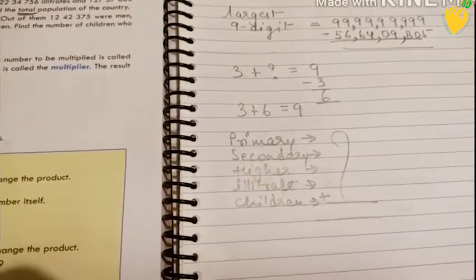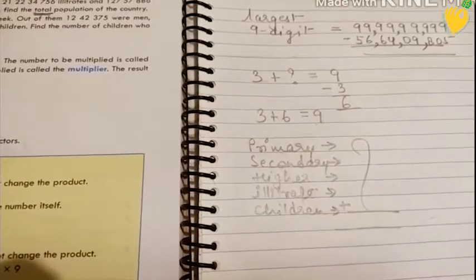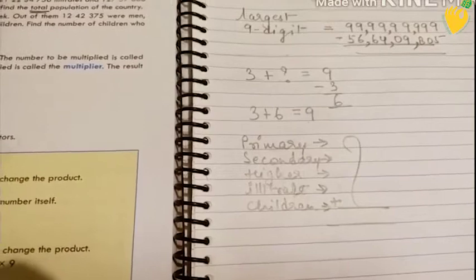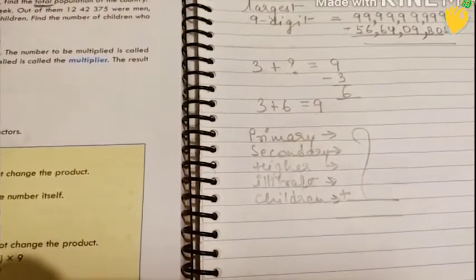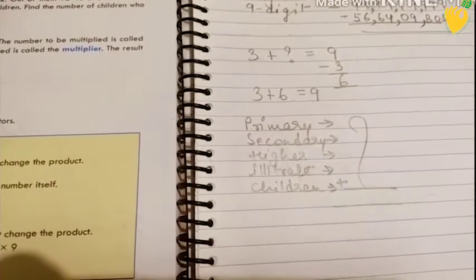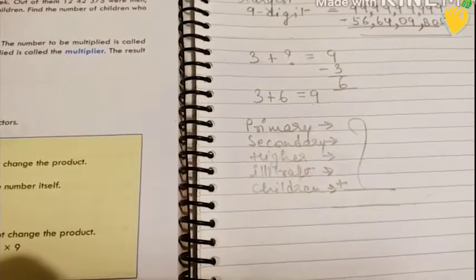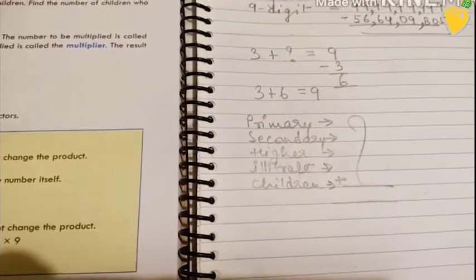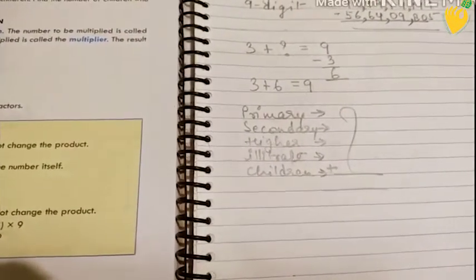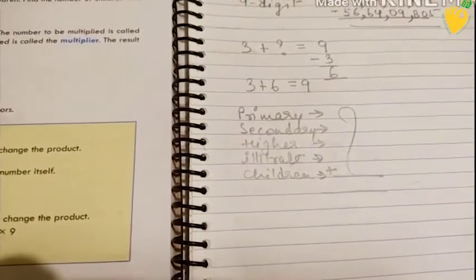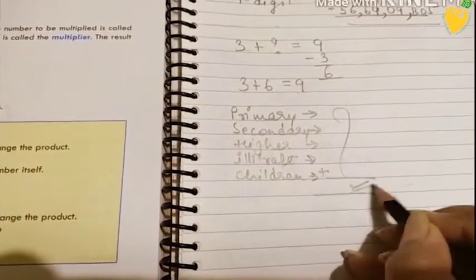Clear? The statement you have to make yourself, like number of people having primary education, number of people having secondary education, number of people having higher education, number of illiterate people, and number of children below the age of school admission. This will be your statement. And you will add all those numbers and write down the answer. The total population of the country is this, which will be the answer.